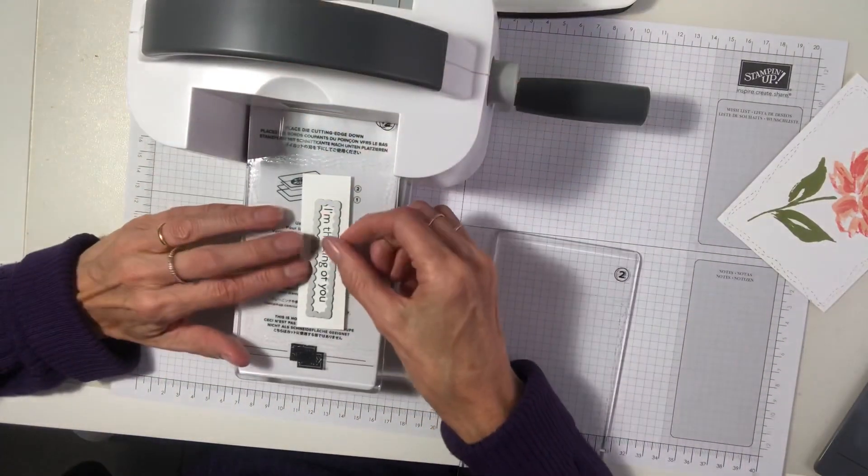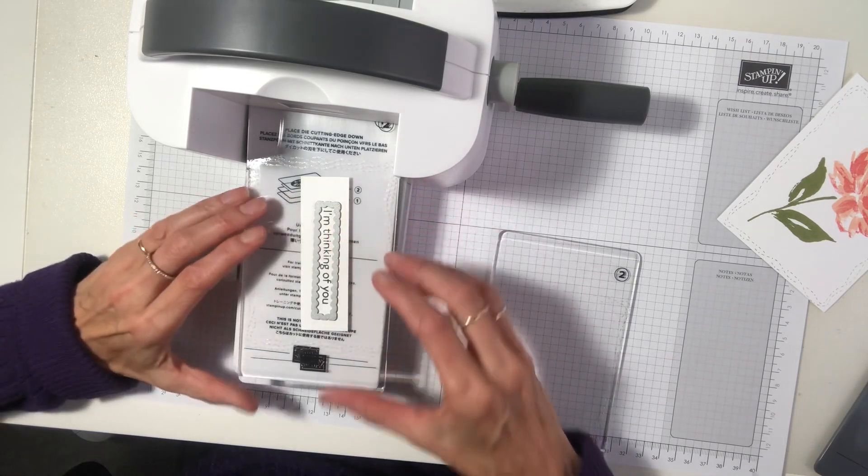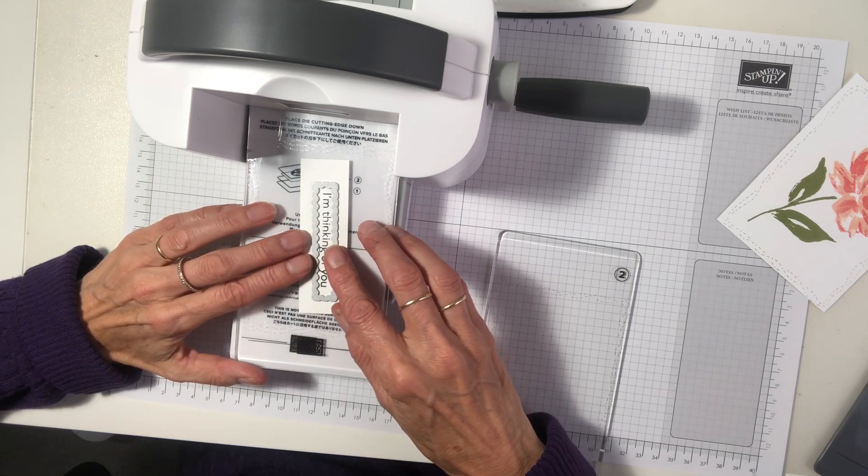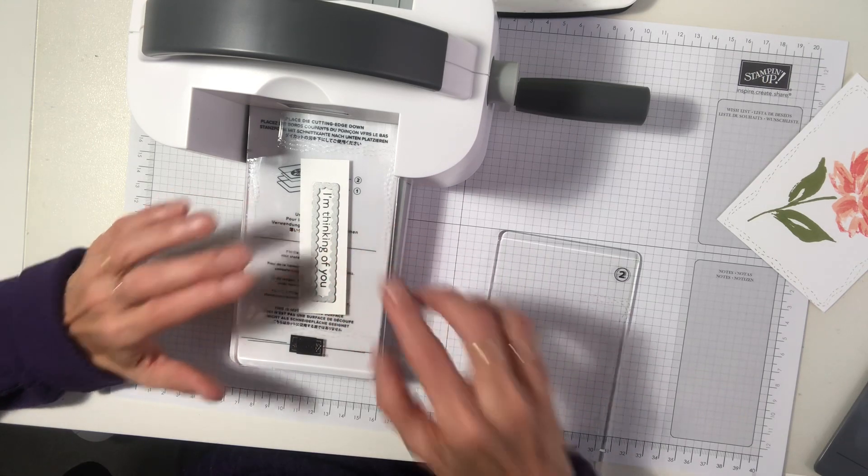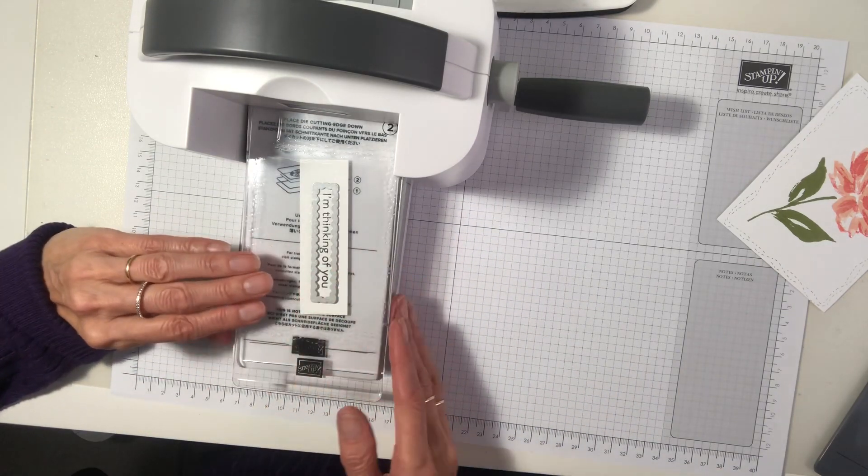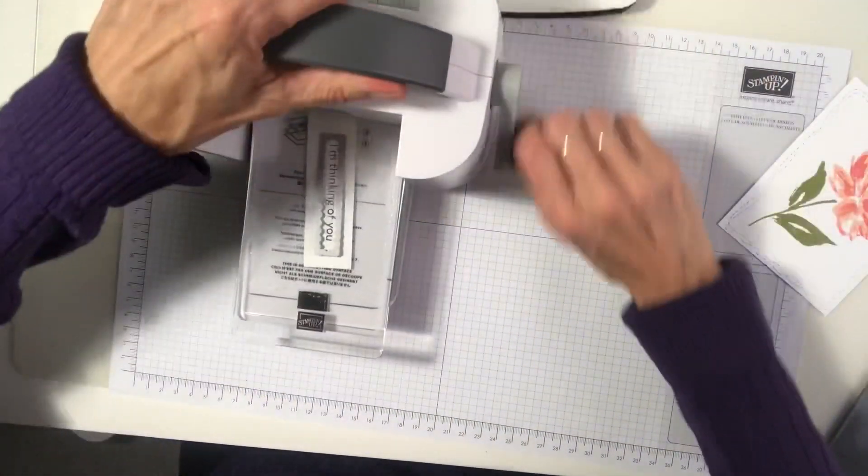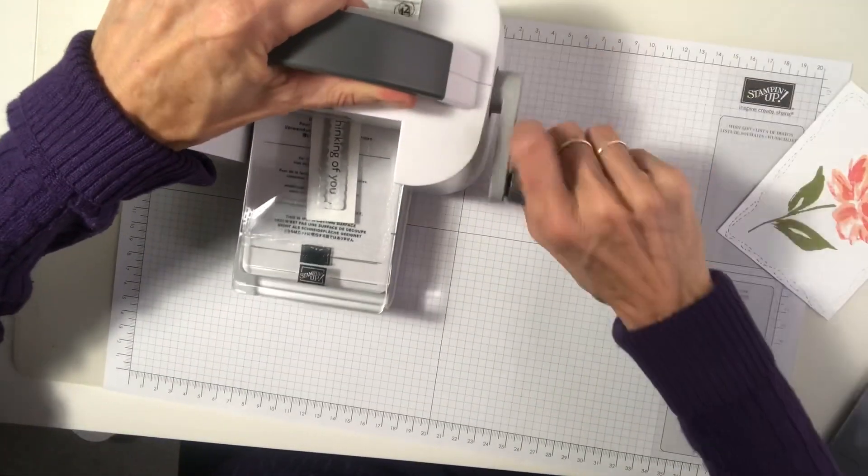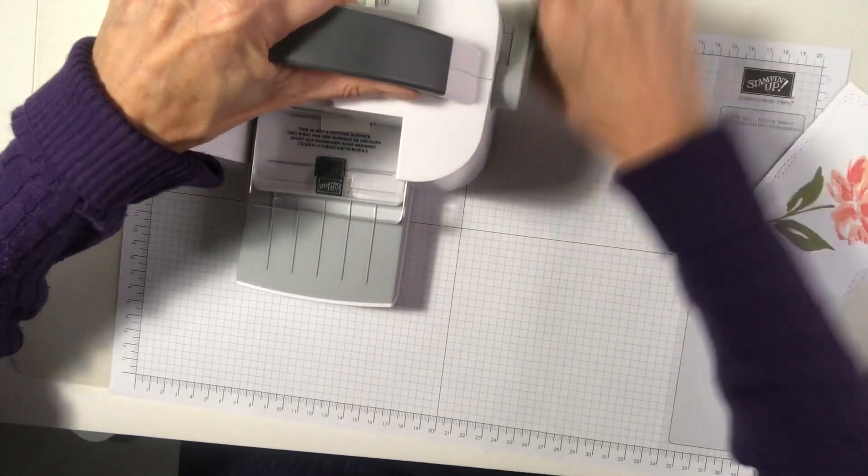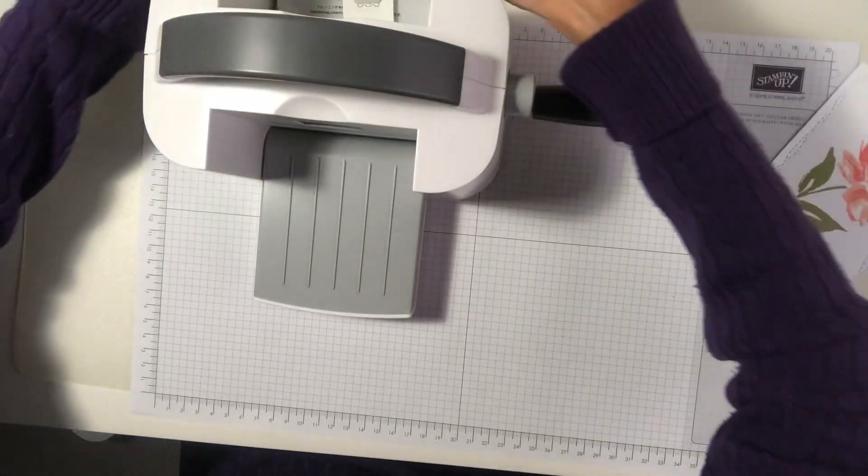So we just want to centre that. I love the little scallopy edge that you'll get on this. Put our plate two on top of it. Let's run that through. Hold it firmly. And with one turn, it'll cut. So it's quite a strong machine.